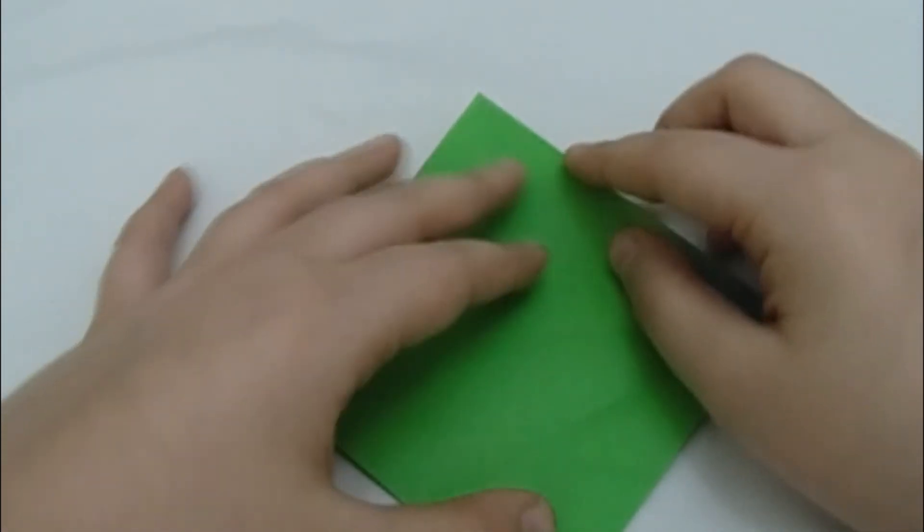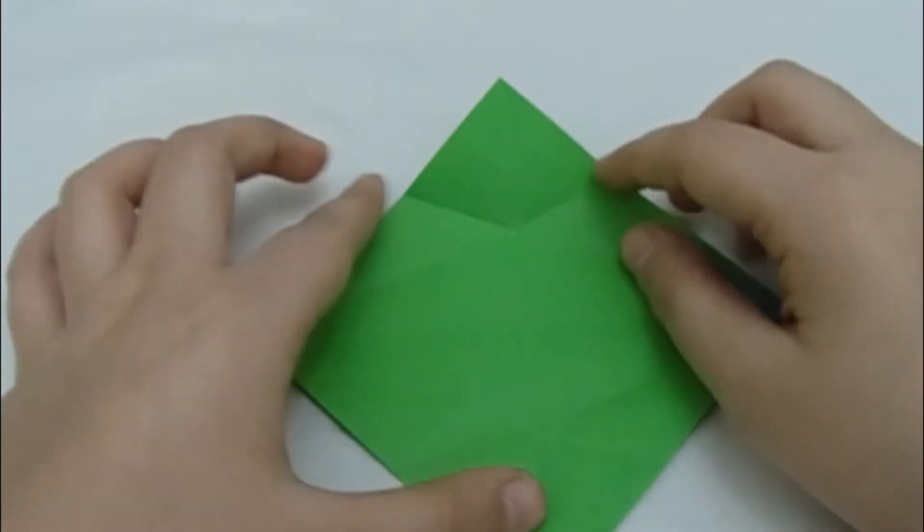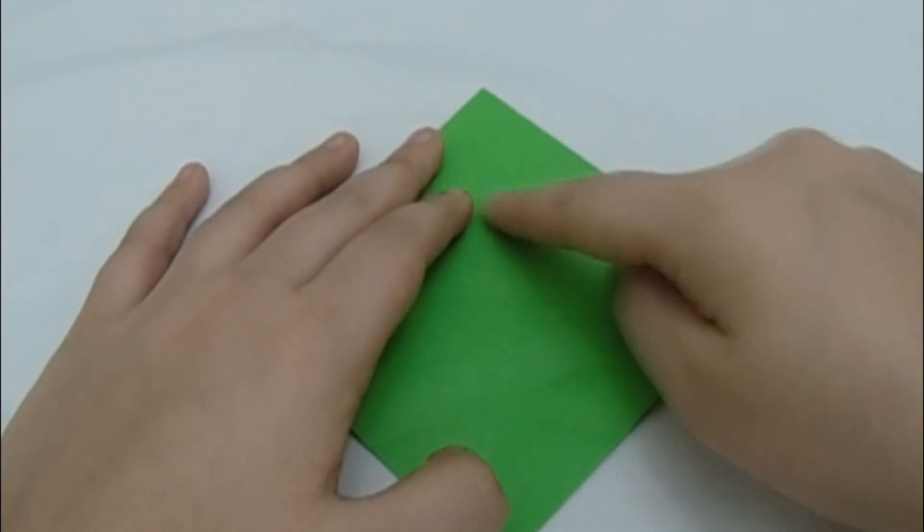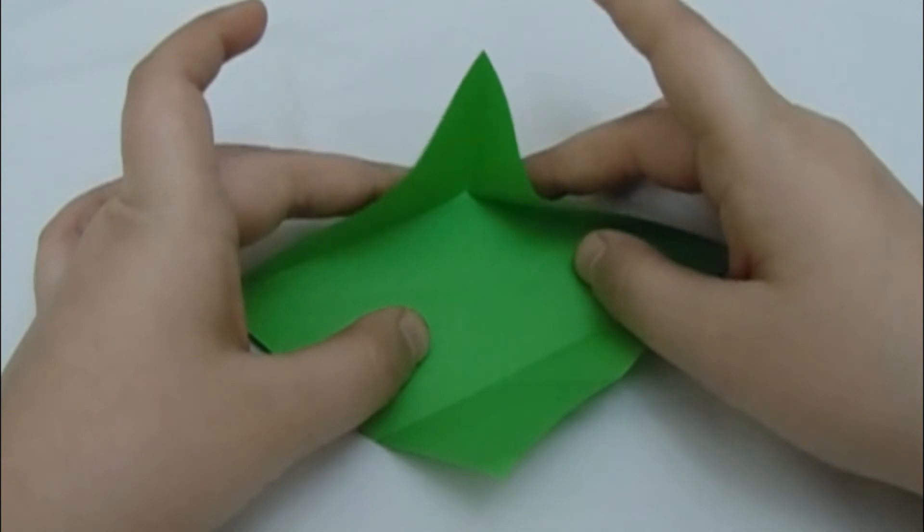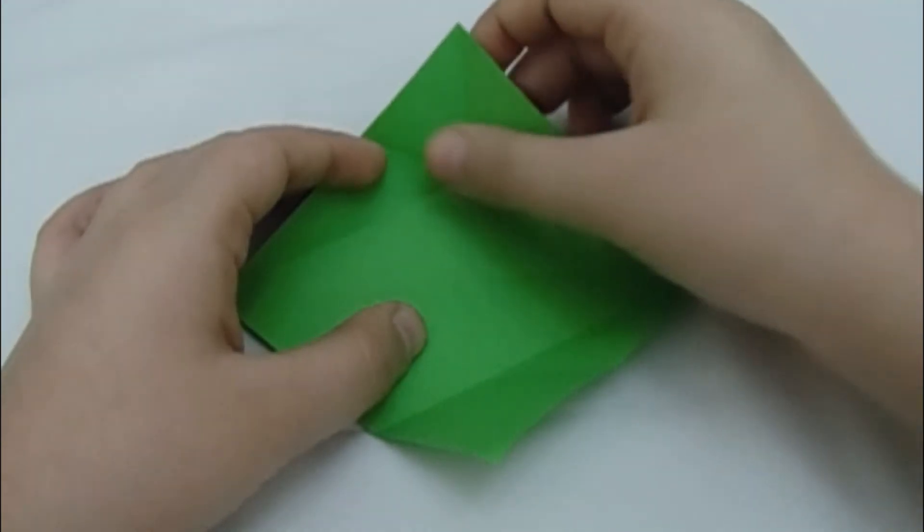So first you want to make a rabbit ear. To do a rabbit ear, pull this edge and this edge at the same time. It's going to look like this. Make sure you're not letting this go inwards. That's wrong.